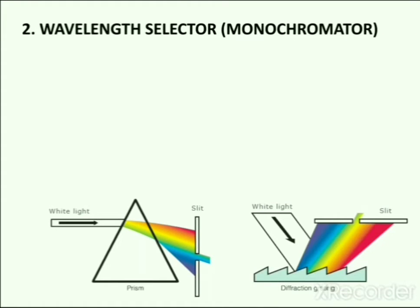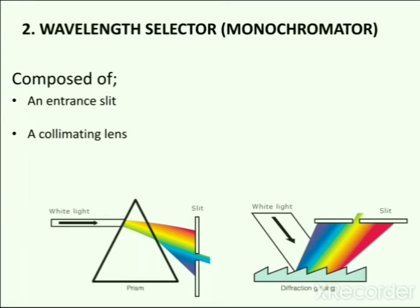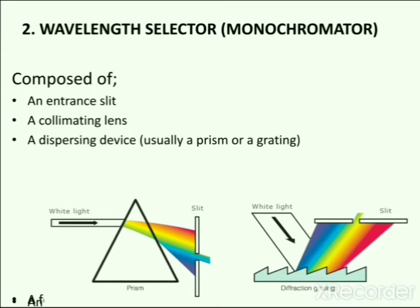The next part of the IR instrument is the wavelength selector — the monochromator. A monochromator is an optical device that transmits a mechanically selected narrow band of wavelengths of light chosen from a wider range of wavelengths available at the input. It is composed of an entrance slit, a collimating lens, a dispersing device (usually a prism or grating), a focusing lens, and an exit slit. Light radiation passes through the entrance slit and is incident upon the dispersing device, which converts the light into its constituent wavelengths. The exit slit allows only a single wavelength to pass at one time, thus converting polychromatic light into monochromatic light.